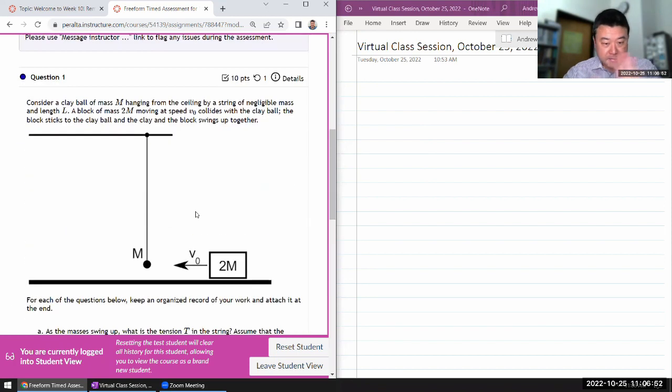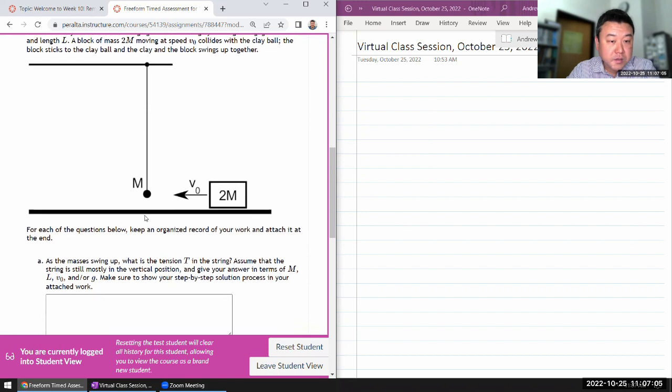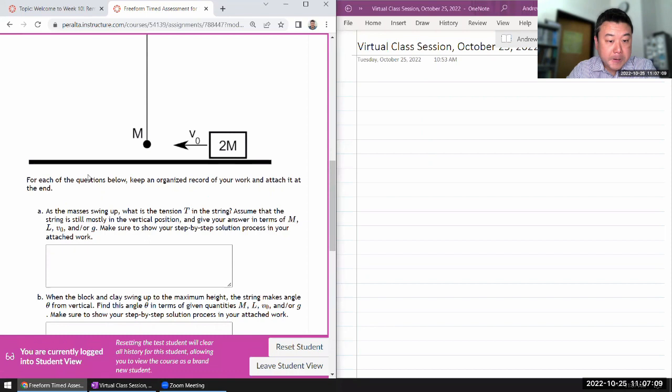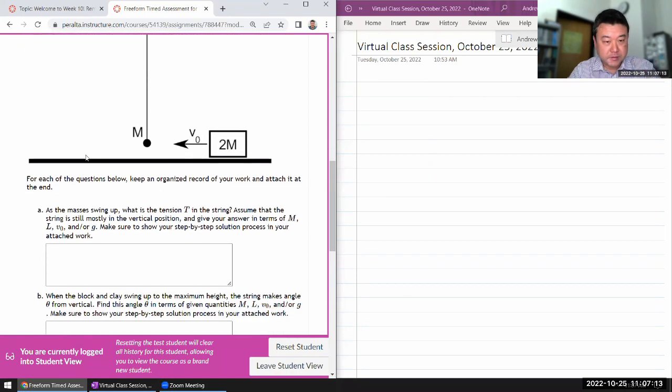Alright, so that is not the question I've gotten before, so I can just go ahead and do it. It says consider a clay ball of mass M hanging from the ceiling, negligible mass. Block collides with a clay ball. The block sticks to the clay ball and they swing up together. There's a picture here, so I will just leave that.